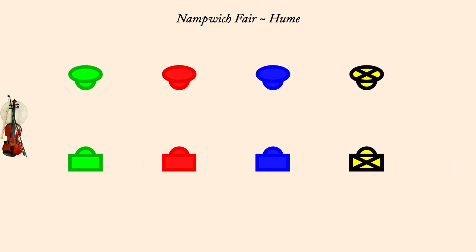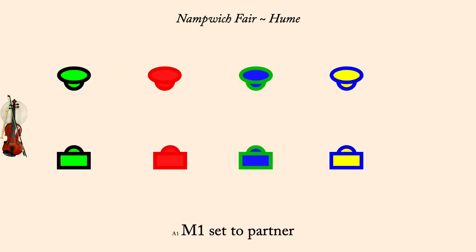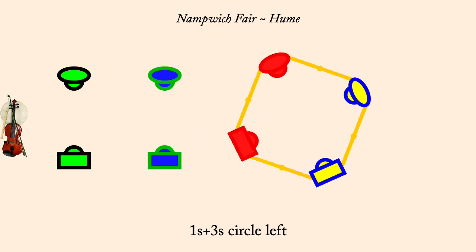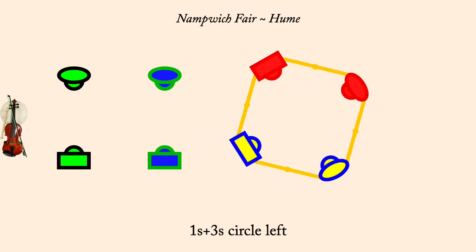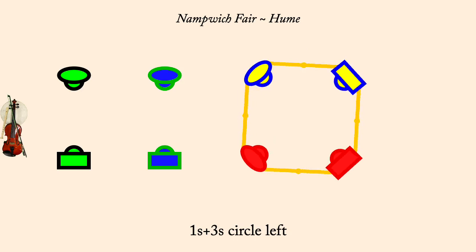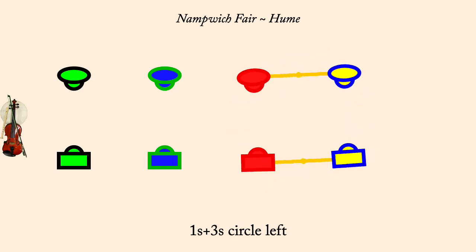Ones and threes circle left. Man one set. Ones cast down as twos lead up. Ones and threes circle left. Man two set.